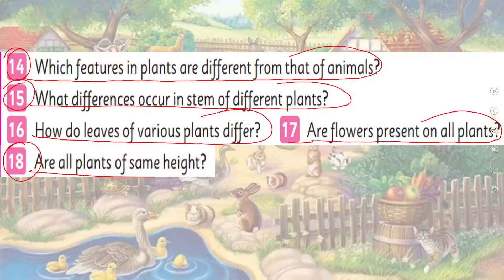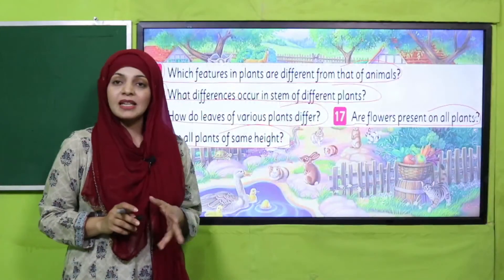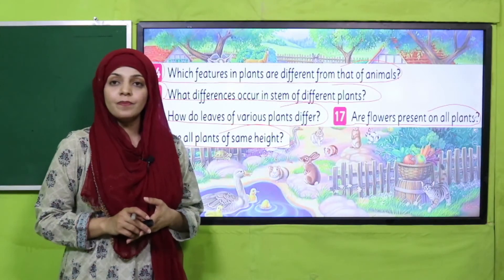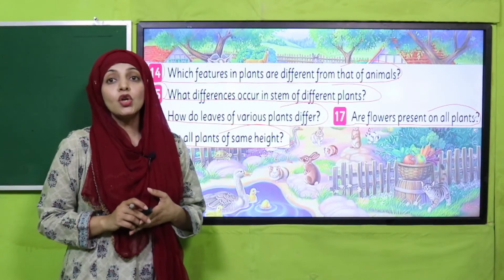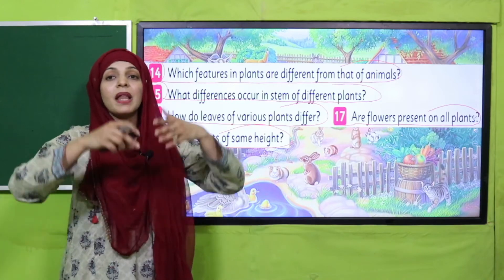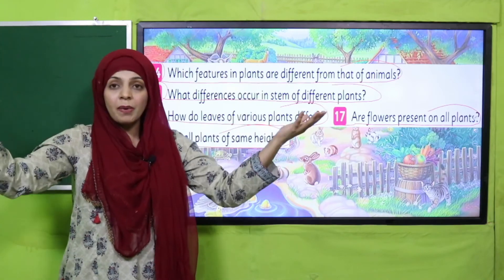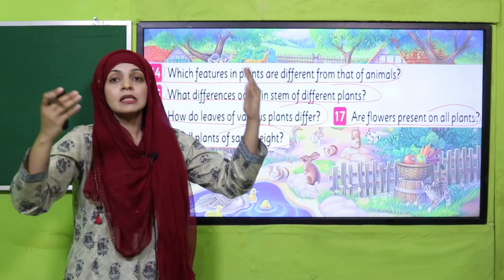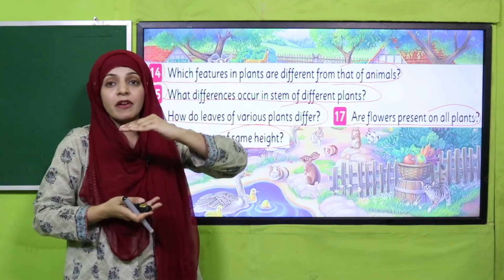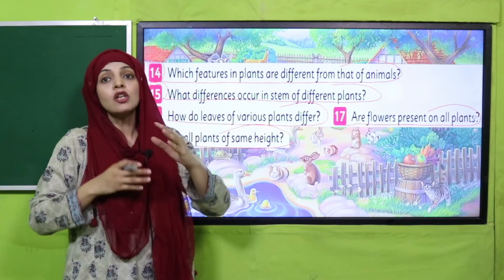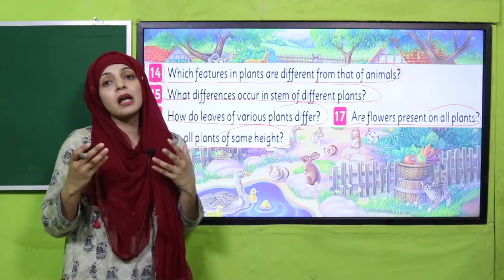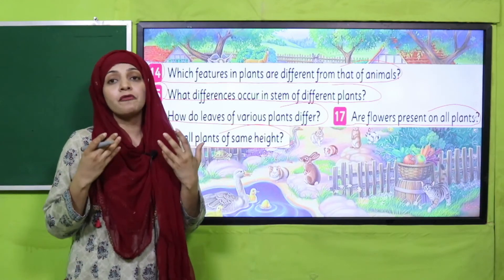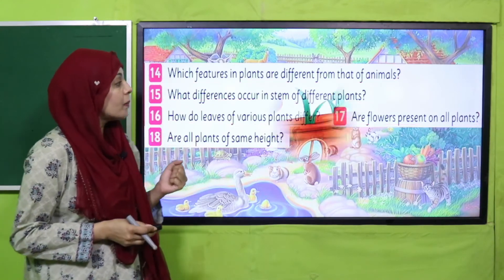Question number 18: are all plants of the same height? No — some plants are very big and have great height, while some plants have very short height. This is how plants are different from each other.